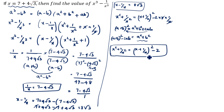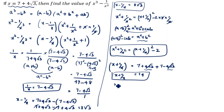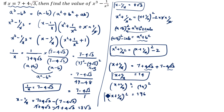We know 1 by x is 7 minus 4 root 3. Now we will find x plus 1 by x. x is 7 plus 4 root 3, and 1 by x is 7 minus 4 root 3. Adding: 4 root 3 and minus 4 root 3 cancel, so x plus 1 by x equals 14. Therefore (x plus 1 by x) whole square equals 14 squared equals 196.